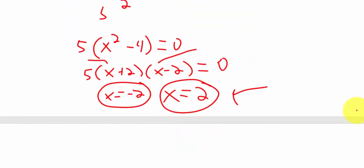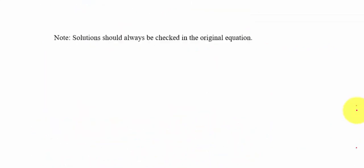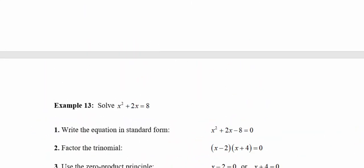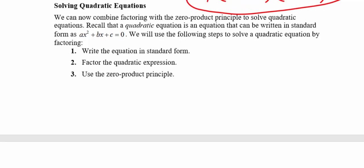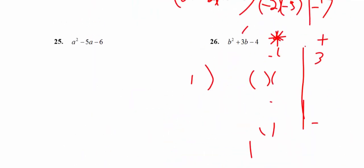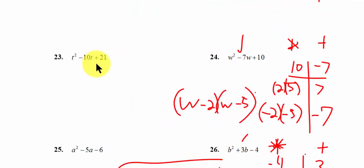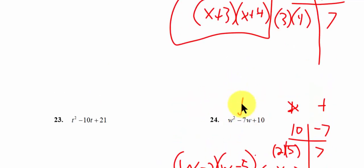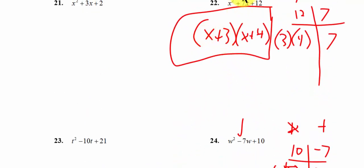If I go back to some of our previous problems where we did not have an equal sign — like 23 or 24, there's no equal sign — so we could factor but couldn't go any further. We had to stop at w minus 2 times w minus 5, or x plus 3 times x plus 4 for problem 22. If we put equals zero, then we take it a step further and say x equals negative 3, x equals negative 4.